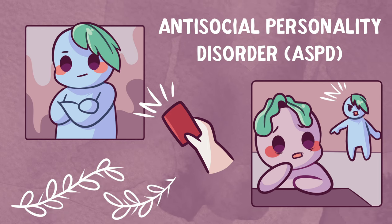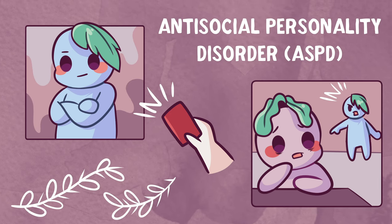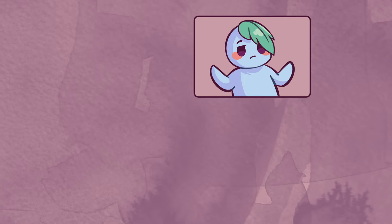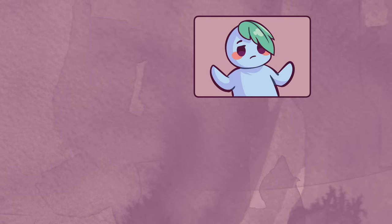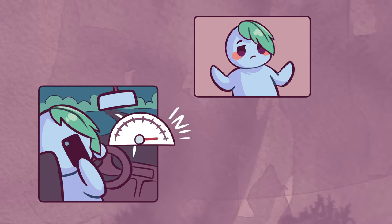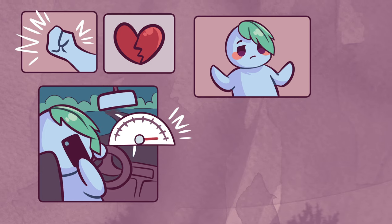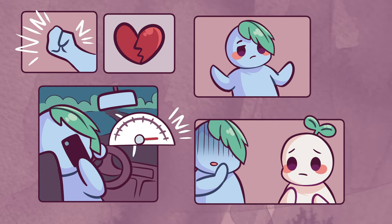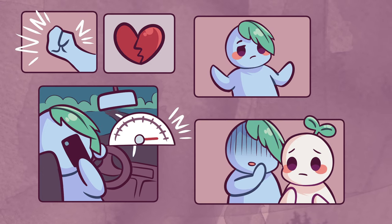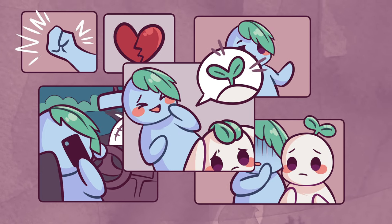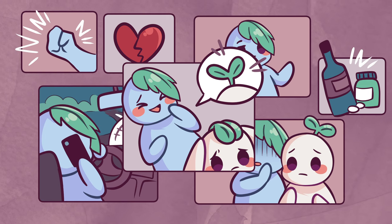According to the Cleveland Clinic and Mayo Clinic, some other signs of ASPD include lack of remorse after hurting another person, reckless behavior, chaotic and abusive relationships, manipulative behavior, disrespect towards others, and substance abuse.